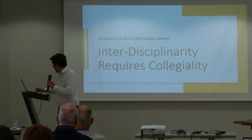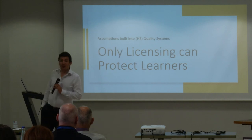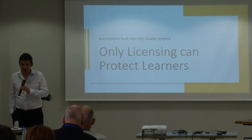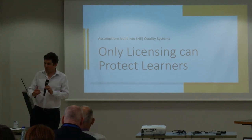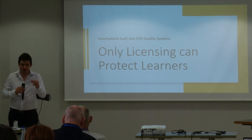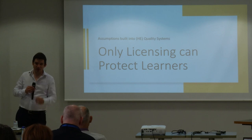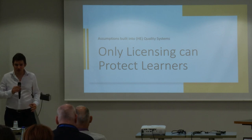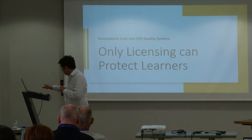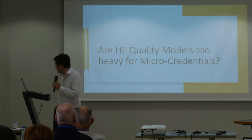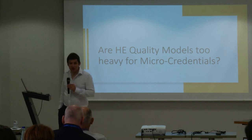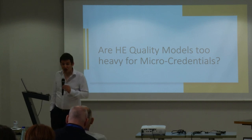Thirdly, the other big assumption is that all of this is so important that only licensing can protect learners. This is a high-value service and we need government protection to ensure learners are not shortchanged — accreditation equals licensing equals protection of learners. That's another assumption built into our systems. So the only question I'm going to ask is: for many micro-credentials, are higher education quality models sometimes a bit of an overkill — are they too heavy?